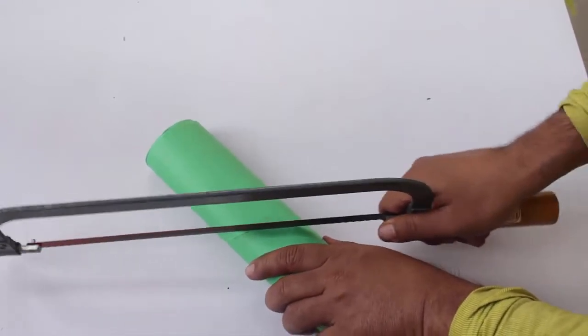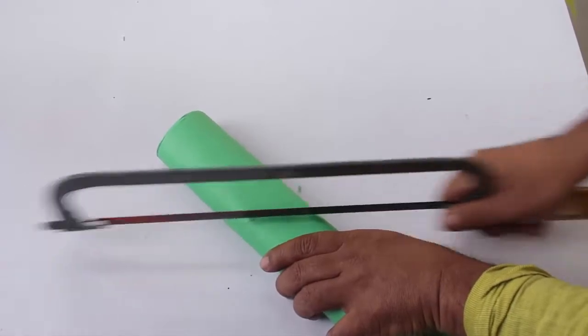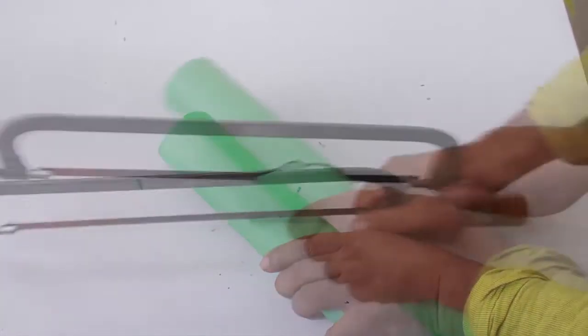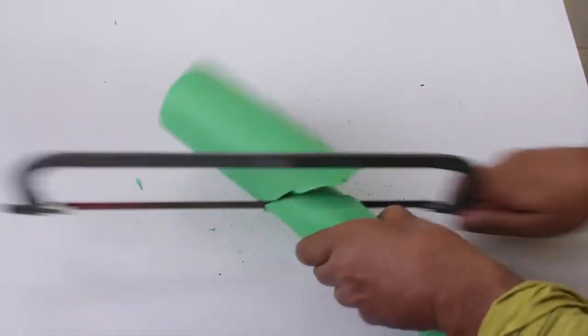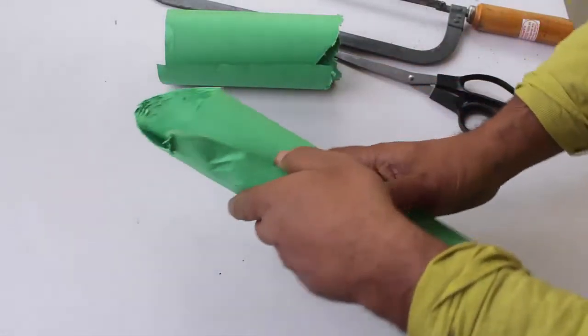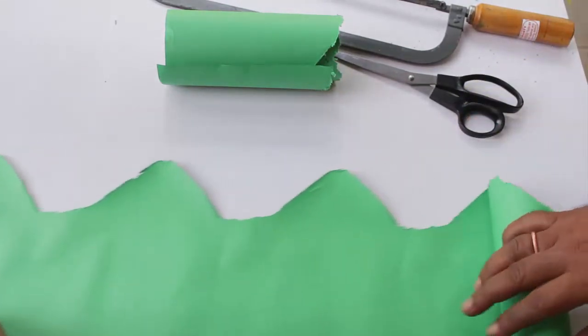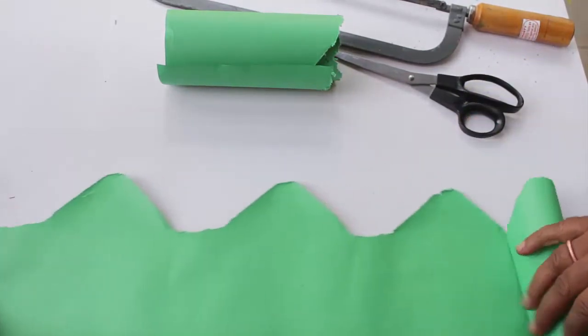Put the saw at 45 degrees and make. And now when we open this, we see a beautiful sine wave.